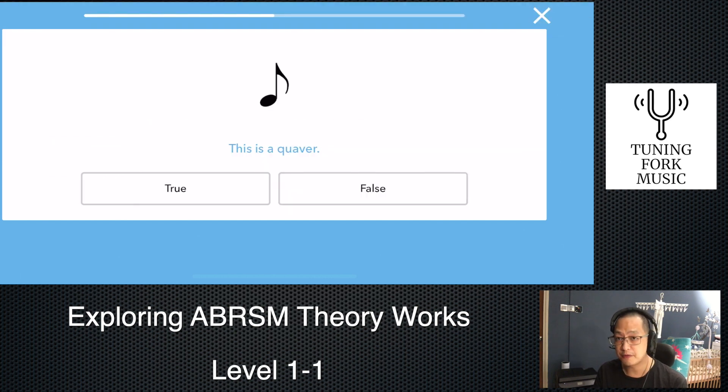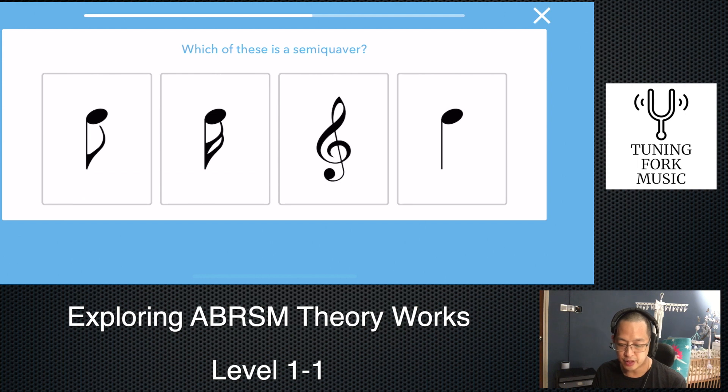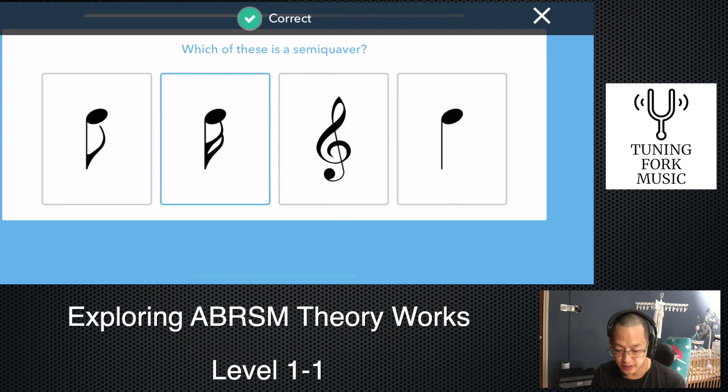Now, see, this is where it gets tricky. You got to be careful. It says, this is a crotchet. Is it? We see one flag. So therefore, it is not a crotchet. It is a quaver. So, we're going to say false. So far, so good.